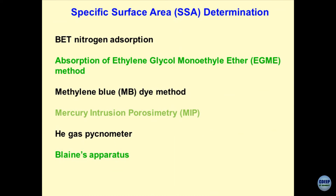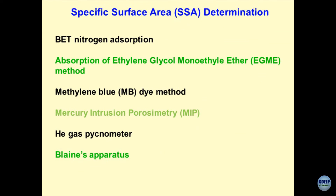A more advanced technique for specific surface area is MIP — Mercury Intrusion Porosimetry — also available in our laboratory. Mercury is intruded into the particles at very high pressure; this will also be covered when discussing pore size distribution. Another method is the helium gas pycnometer — helium's atomic size is much smaller than nitrogen, so for extremely fine particles, helium is used in place of water because of the density contrast and because it is a non-wetting fluid. Helium gas pycnometry also gives the surface area of particles.